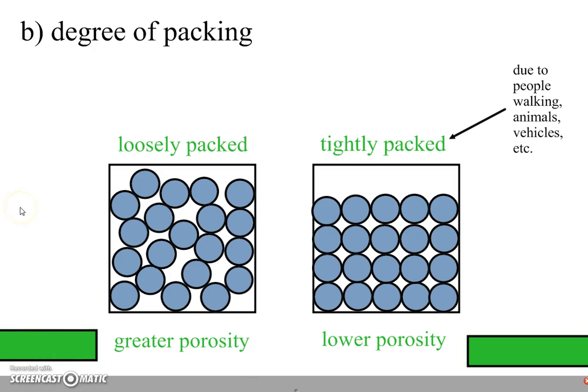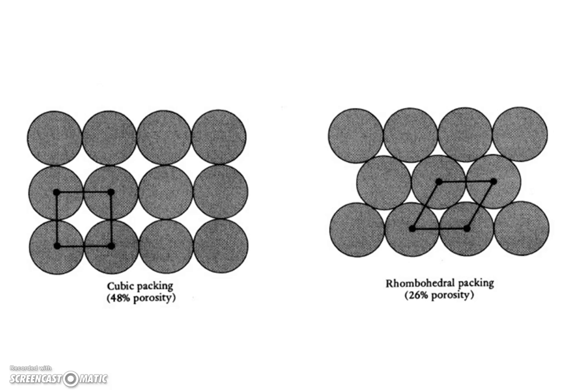The third factor that affects porosity, well, actually, before we get to that, here's another image. In this first one, the way that these grains are arranged is if you put a dot in the center of each grain and you connected four of them, you'd get a cube. So that's called cubic packing. In this sample, the porosity is approximately 48%.